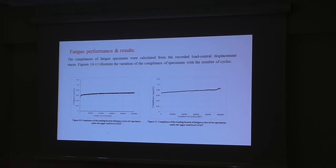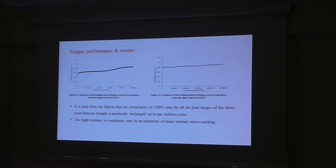The compliance of the fatigue specimens were calculated from the recorded load deflection traces. The figures 10 to 13 show the variation in the compliance of a specimen with the number of cycles. Significantly from the figures, the compliance of the ultra-high performance concrete slab over a range of three-point bending strength is practically unchanged up to 1 million cycles. And the slight increase seen in the compliance is maybe an indication of internal micro-cracking.